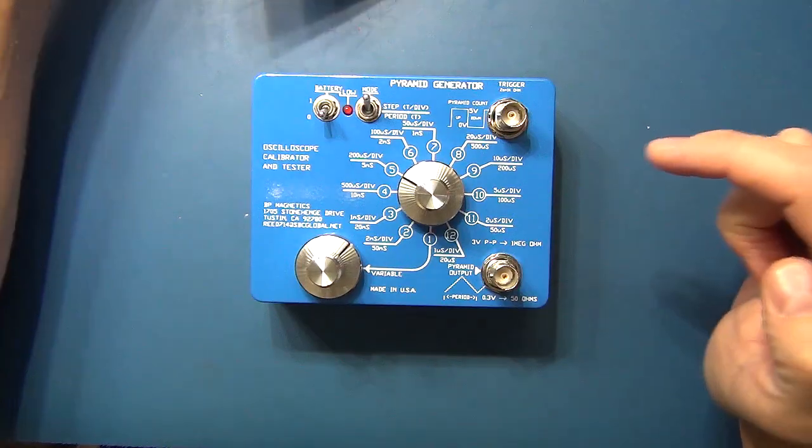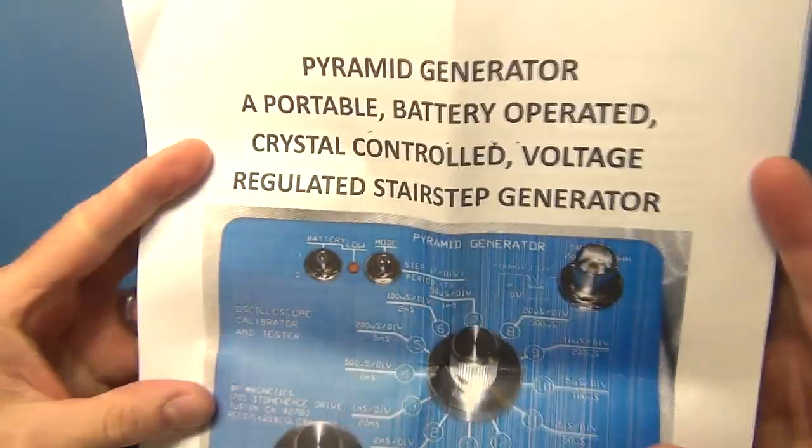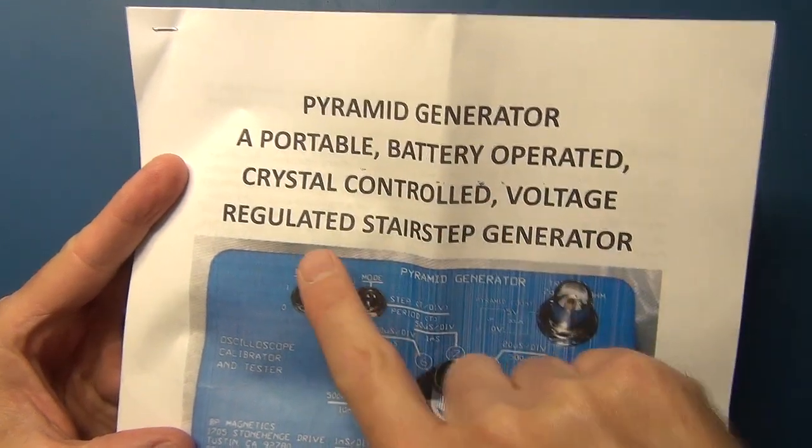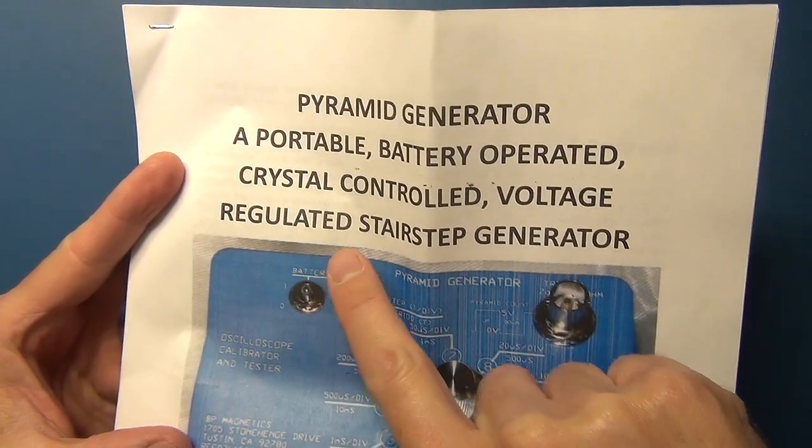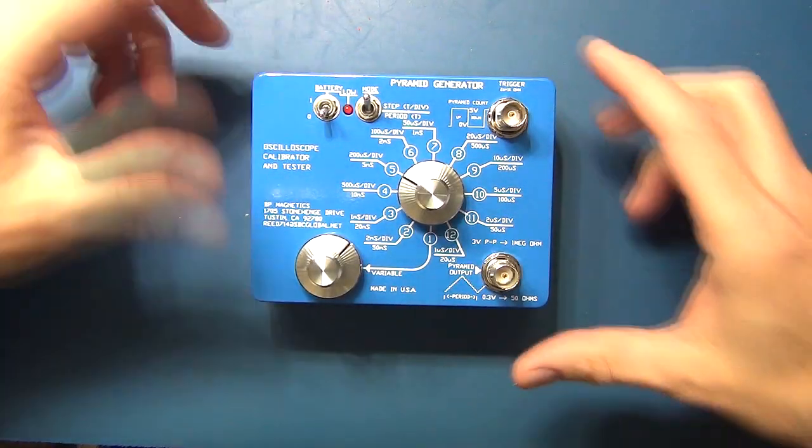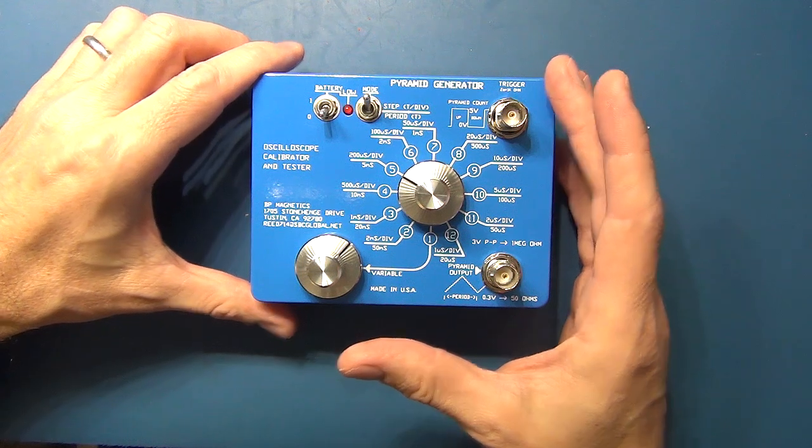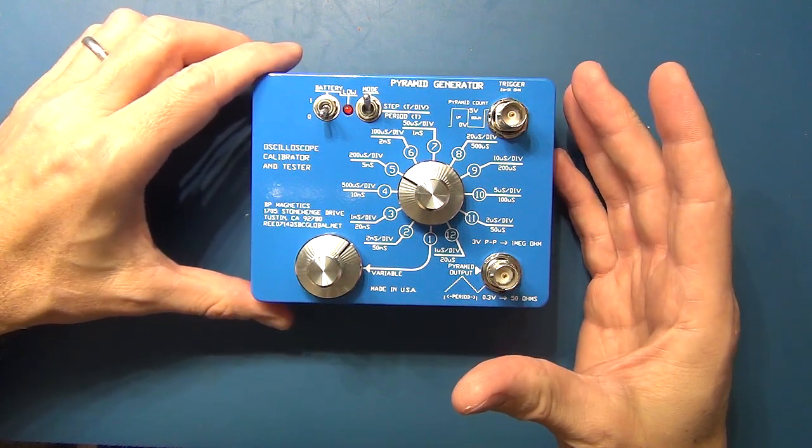The gent who is selling these provides a very nice set of instructions. It's a pyramid generator portable battery operated crystal controlled voltage regulated stair-step generator. So it provides a calibration signal to your oscilloscope that you can use to check the accuracy of your oscilloscope.